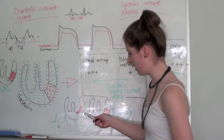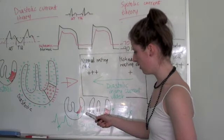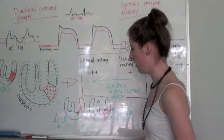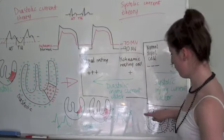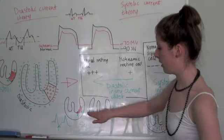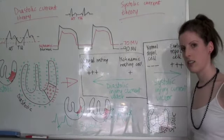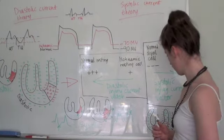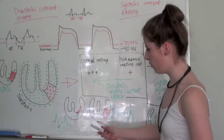So here is the systolic injury current vector which is moving from the negative normal myocardium to the injured infarcting area. And therefore, because it is moving away from the chest leads,